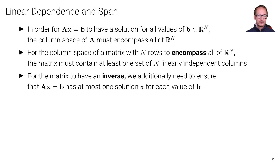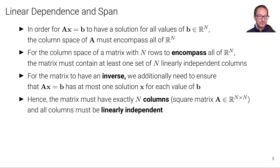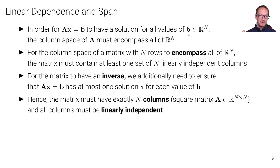Furthermore, for the matrix to have an inverse, we additionally need to ensure that Ax equals b has at most one solution x for each value of b. This means the matrix must have exactly n columns. If it had more columns, it could still span Rⁿ, but there would be at least two linearly dependent columns, producing infinitely many solutions. We want a unique solution, so the matrix must have exactly n columns and all columns must be linearly independent — this holds for arbitrary values of b.